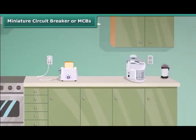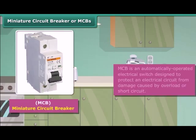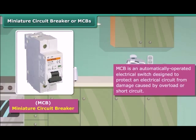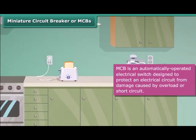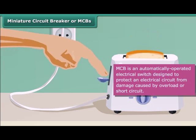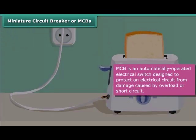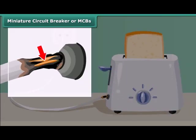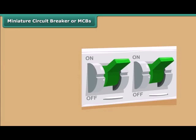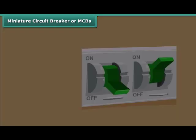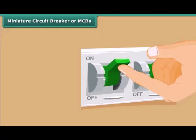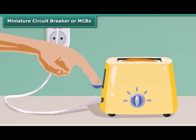A Miniature Circuit Breaker, or MCB, is an automatically operated electrical switch designed to protect an electrical circuit from damage caused by overload or short circuit. Whenever there is a fault in a circuit, the MCB interrupts continuity to discontinue electrical flow immediately. It can be reset to resume normal operation.